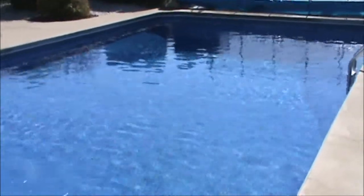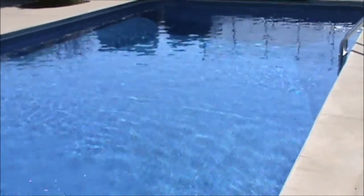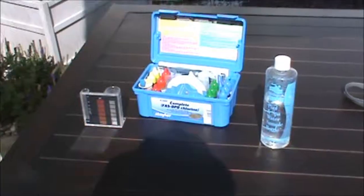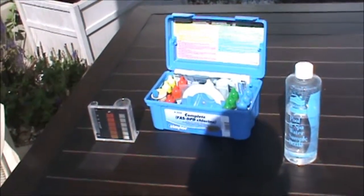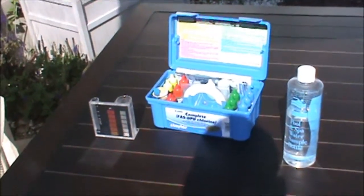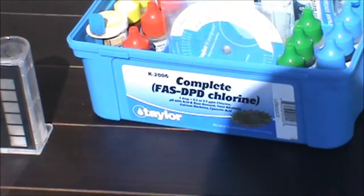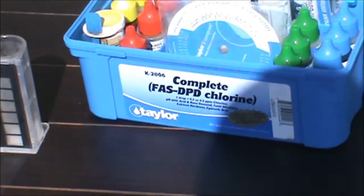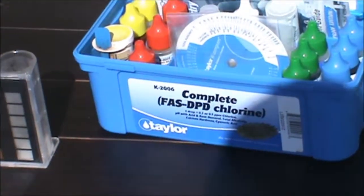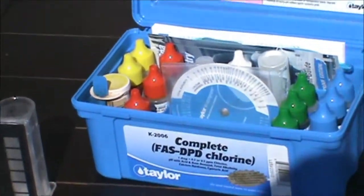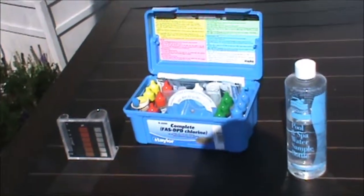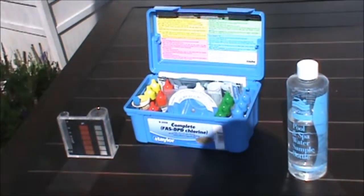This year I took control of my pool myself. So if you want to take care of your pool yourself, the first thing you're going to need is a good test kit. This one here is a Taylor K-2006 complete FAS DPD chlorine test kit. This kit probably costs about $60, it'll last you at least a season and even more depending on how much you use it.